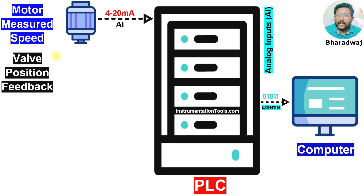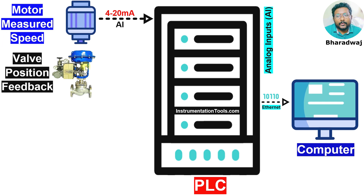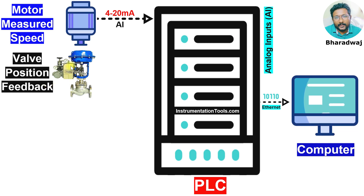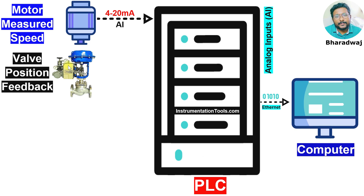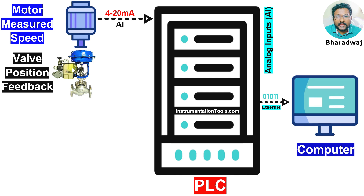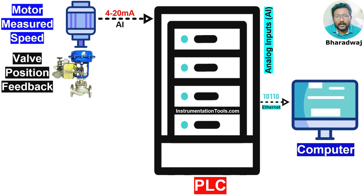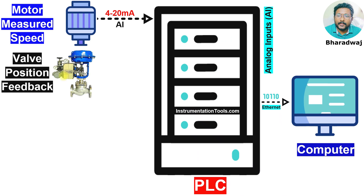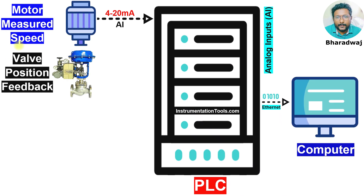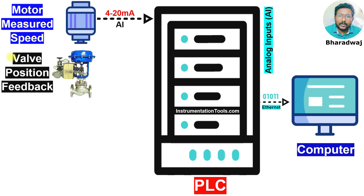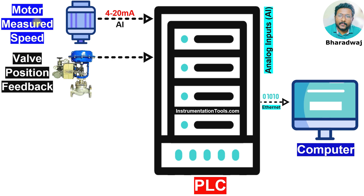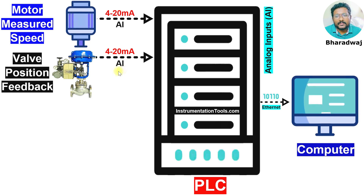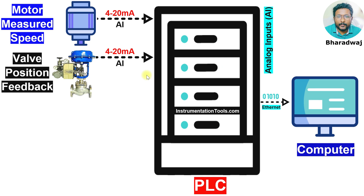If you have a control valve, you can take valve position feedback — that means how much the valve is opened. For example, 26% the valve is opened, 70% the valve is opened, or 40% the valve is closed. You can take the control valve feedback. This feedback is an analog input to the PLC — a 4 to 20 mA analog signal, analog input.